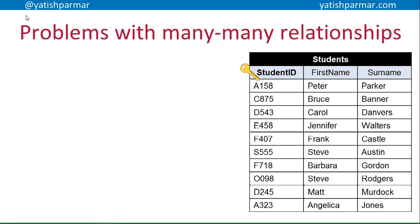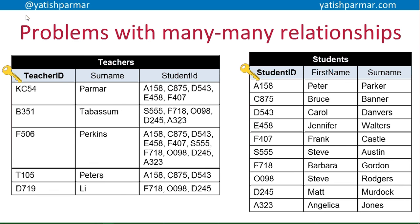For the many-to-many relationship: many students have many teachers. In the students table, student ID is the primary key. In the teacher's table, there is teacher ID — Mr. Palmer is in the first row with five students. The problem is it's difficult to query that data. You could put the teacher's field in the student's table, but then which teacher do you put for each student? Peter Parker would need KC54, F506, and T105 because he has three teachers. Many-to-many relationships can't logically exist in a database — it's difficult to make logical links between them.